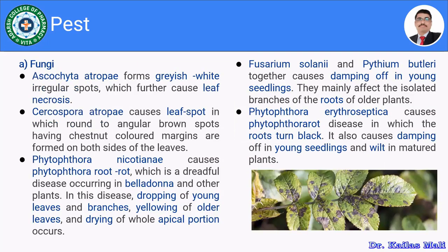Moving towards the types of pests — I am going to cite some examples which may affect the yield of medicinal plants. Ascocyta atrophy forms grayish white irregular spots which further causes leaf necrosis. When this fungus infects the plant, specifically the leaves, there may be formation of grayish white irregular spots which further cause leaf necrosis.